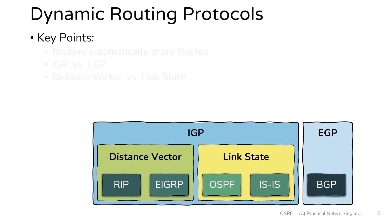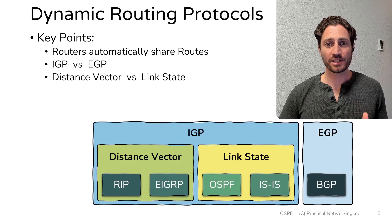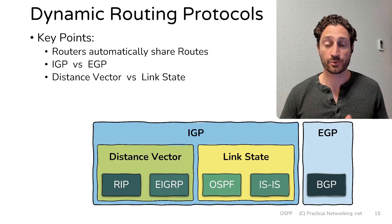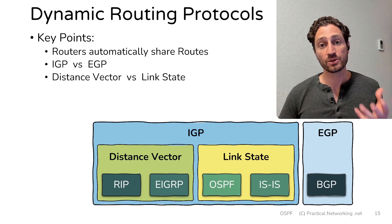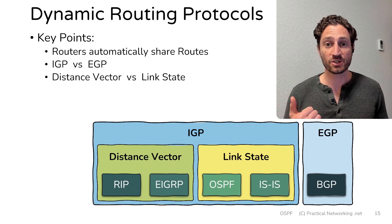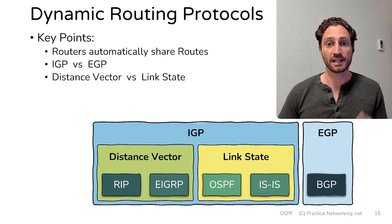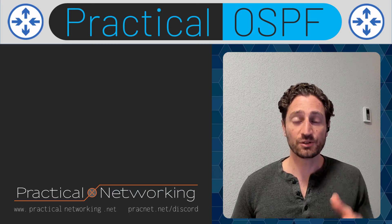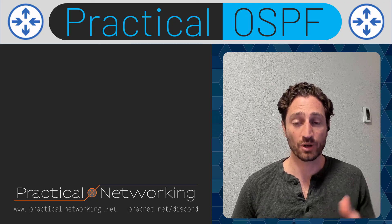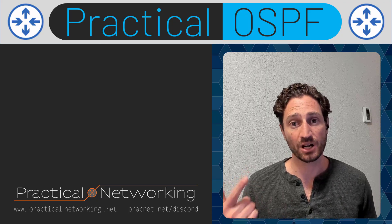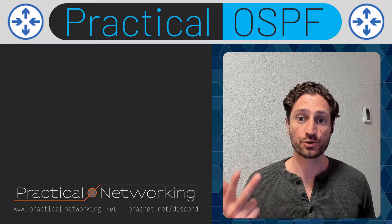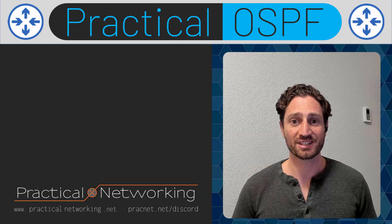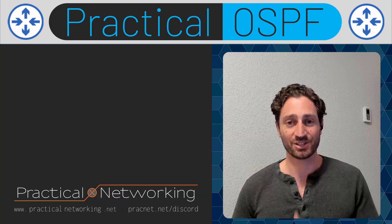That wraps up this lesson. The main takeaways are: understanding that a dynamic routing protocol allows routers to automatically share routes with one another, and understanding the two categories discussed — interior gateway protocols versus exterior gateway protocols, and distance vector protocols versus link state protocols. If you enjoyed this lesson, you can help by hitting the like button, subscribing, and leaving a comment below, as those three things tell YouTube to show this video to a wider audience. Thank you for watching, and I'll see you in the next one.